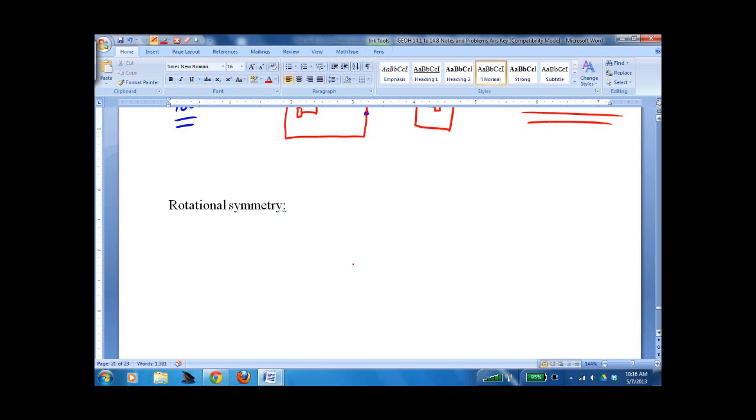Rotational symmetry is like point symmetry, but it doesn't have to be 180 degrees. You have something like this, where this is 120 degrees. So it has 120 degrees. This is another 120. So we could also say it has 240 degrees, so on and so on.